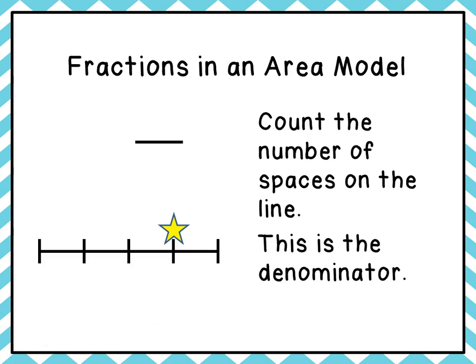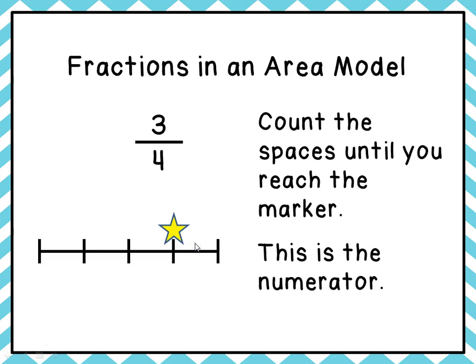Now let's figure out what fraction is shown on this number line. First, we count the number of spaces: one, two, three, four — so our denominator is going to be four. Then we count the spaces until we reach the marker: one, two, three — that is the numerator. So our fraction ends up being three-fourths.